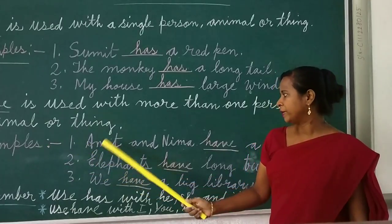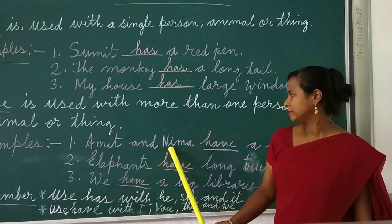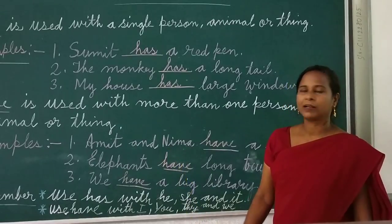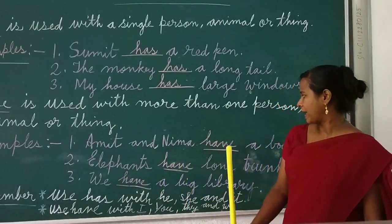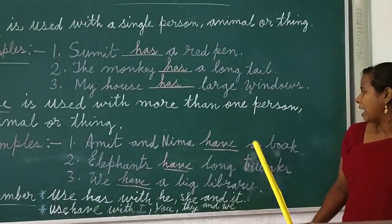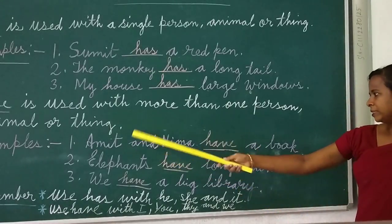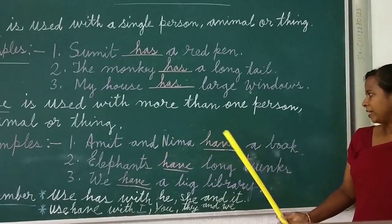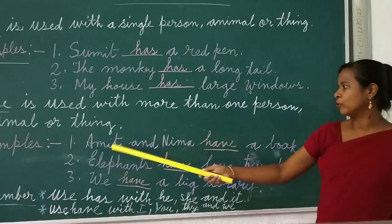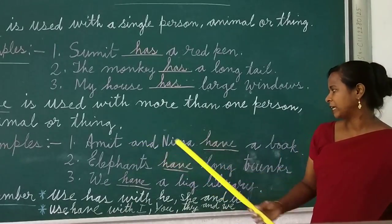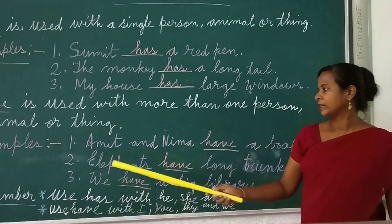Example: two persons — that is why 'have'. They have a book. Both of them — two persons — that is why 'have'.